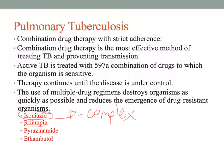Strict adherence to the prescribed drug regimen is crucial for suppressing the disease. A major nursing role is teaching patients about drug therapy and stressing the importance of taking it exactly as prescribed for the full duration. Following homeless patients or those with substance use disorders can be challenging, contributing to the rise in TB cases in recent years.